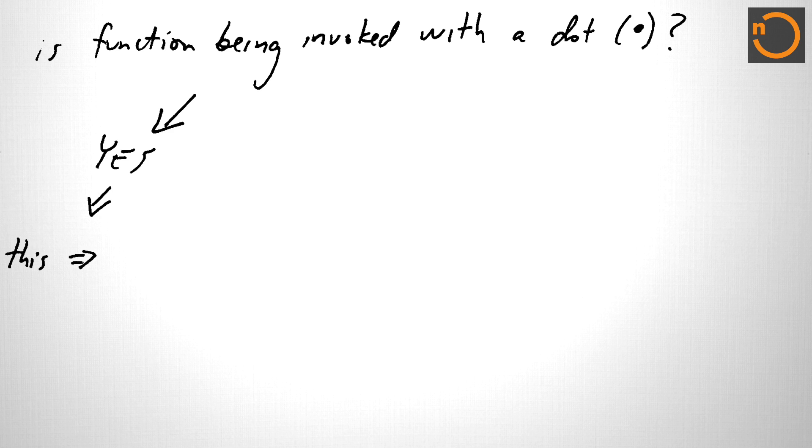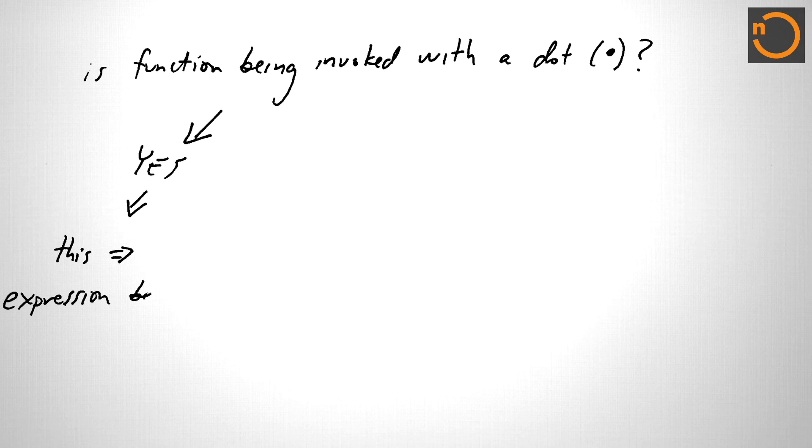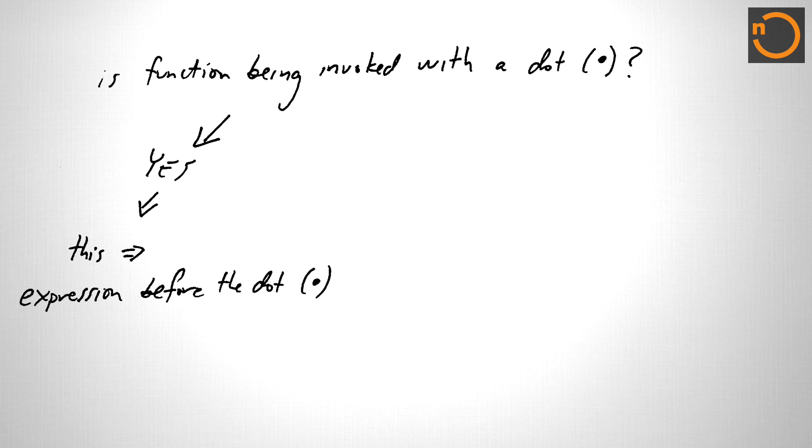So if we're calling a function with a dot, then this is going to be bound to the thing before the dot. So let's take a look at that part. Is function being invoked with a dot? If the answer to this question is yes, then this inside of that function will evaluate to whatever is before the dot.